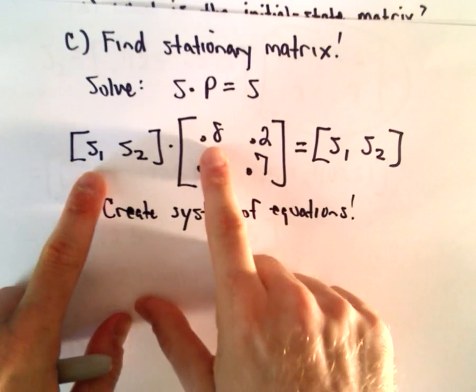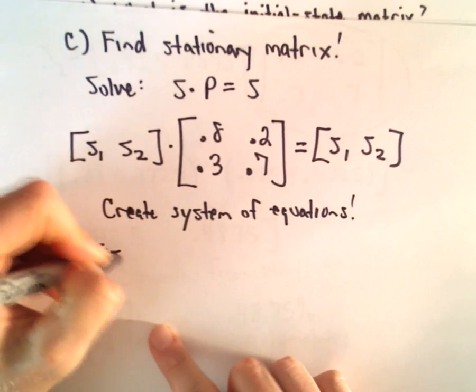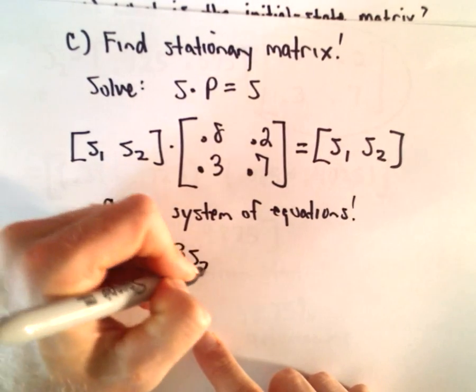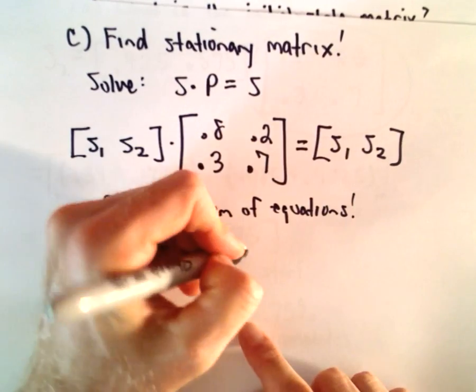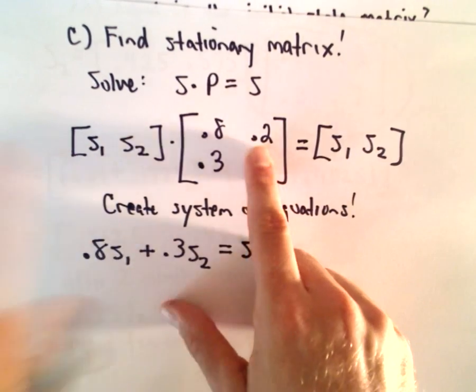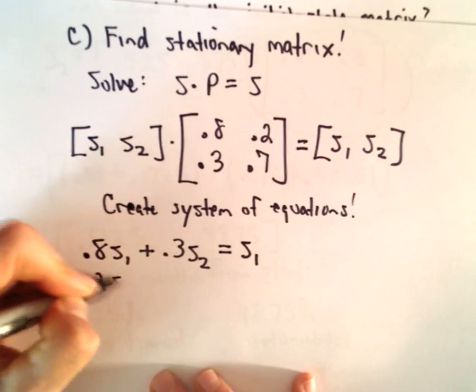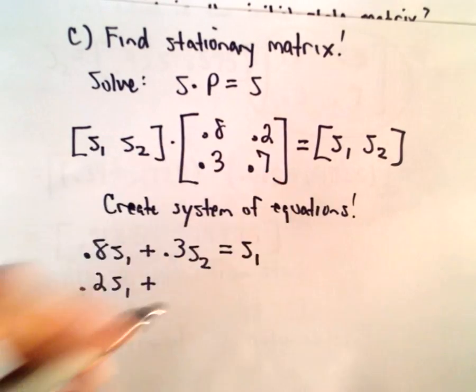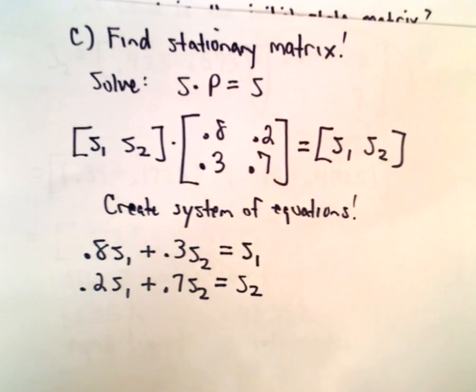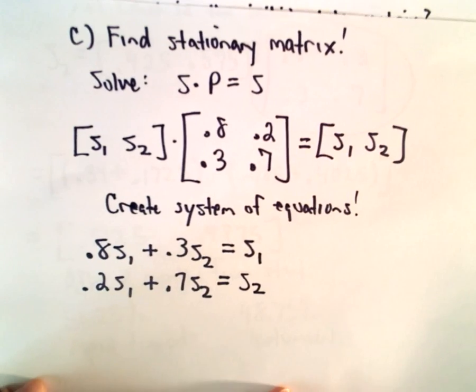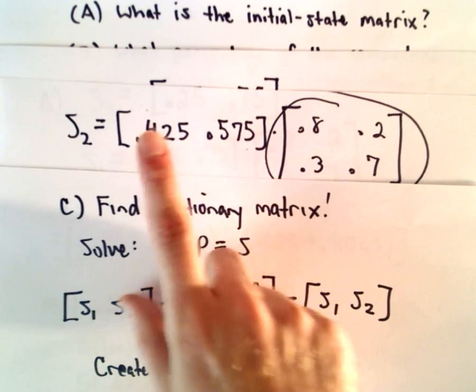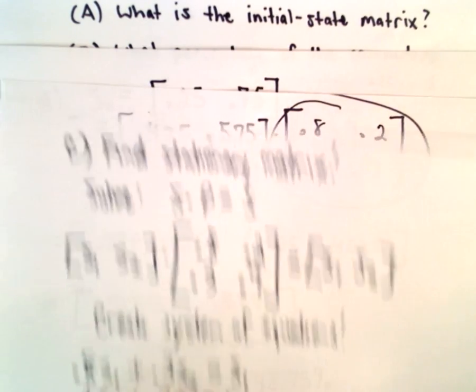If we multiply 0.8 and S1, we get 0.8 S1 plus 0.3 times S2, which equals the first entry S1. We'll create another equation: 0.2 times S1 plus 0.7 times S2 equals S2. And the other equation we're going to use is that the proportions always add up to 1, so S1 plus S2 equals 1.